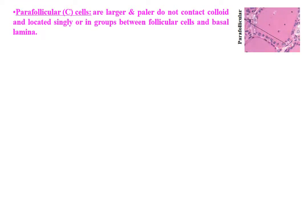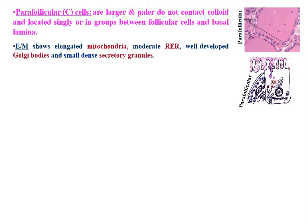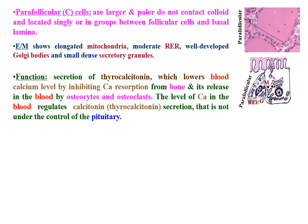Parafollicular cells or C cells are larger and paler, do not contact the colloid, and are located singly or in groups between follicular cells and the basal lamina. By electron microscopy, the cells show elongated mitochondria, moderate rough endoplasmic reticulum, well-developed Golgi bodies, and small dense secretory granules. Function: secretion of thyrocalcitonin, which lowers blood calcium level by inhibiting calcium resorption from bone and its release in the blood by osteocytes and osteoclasts. Thyrocalcitonin secretion is not under the control of the pituitary.